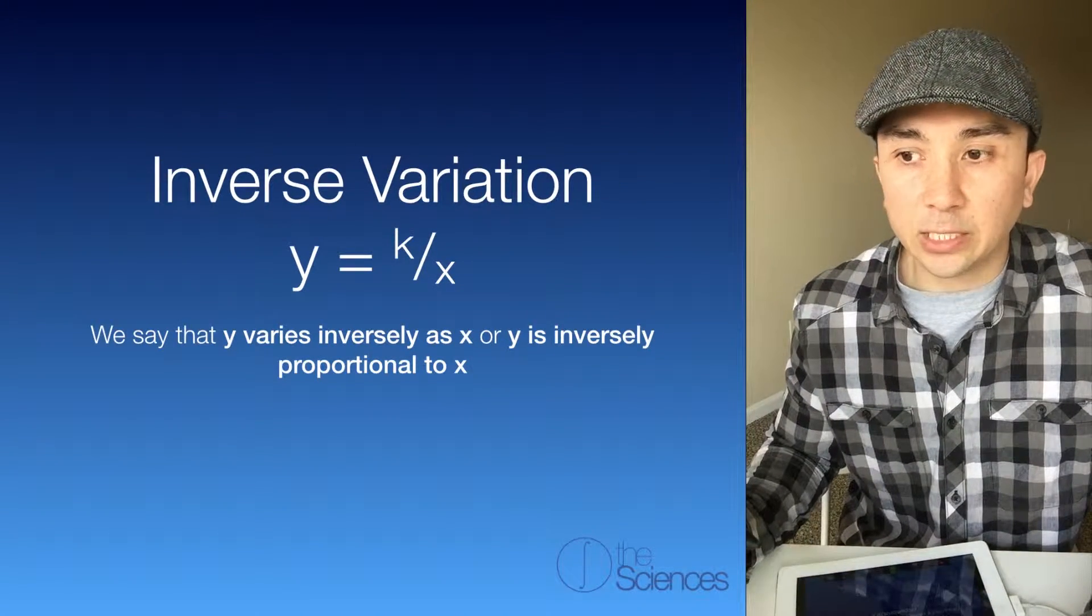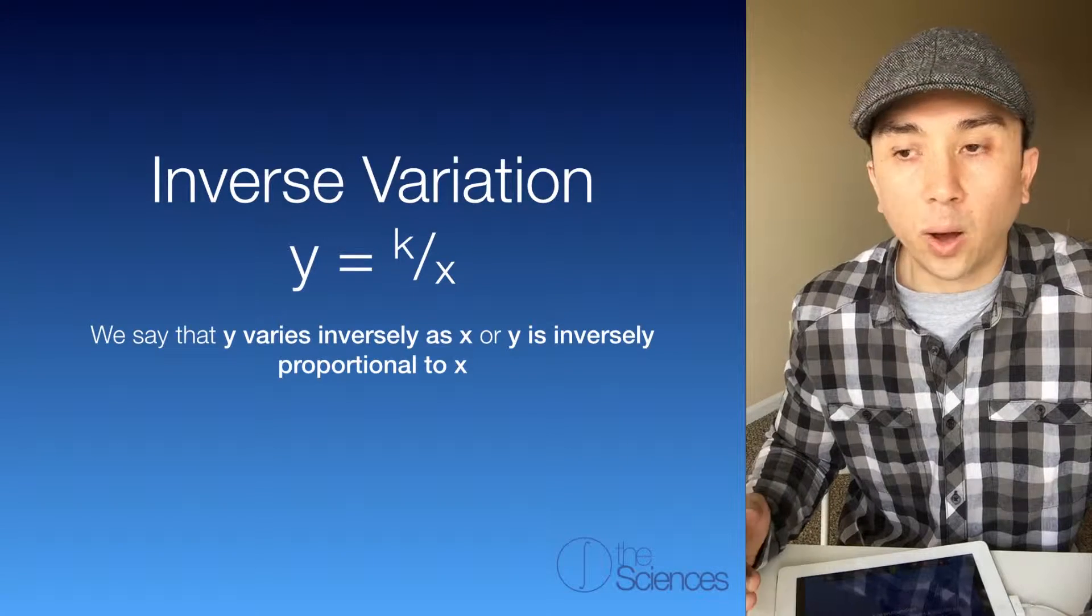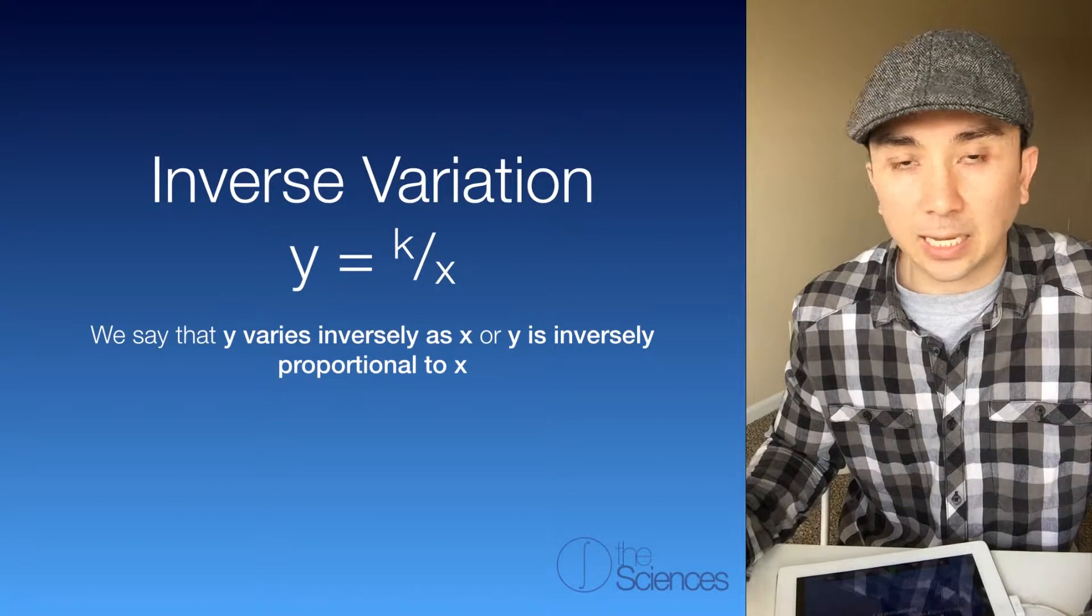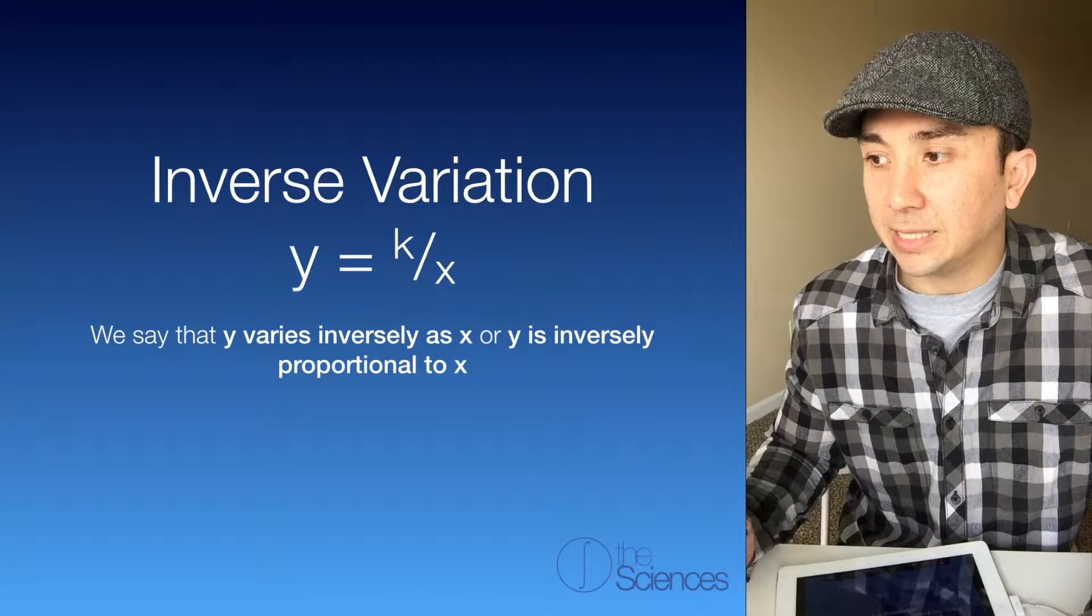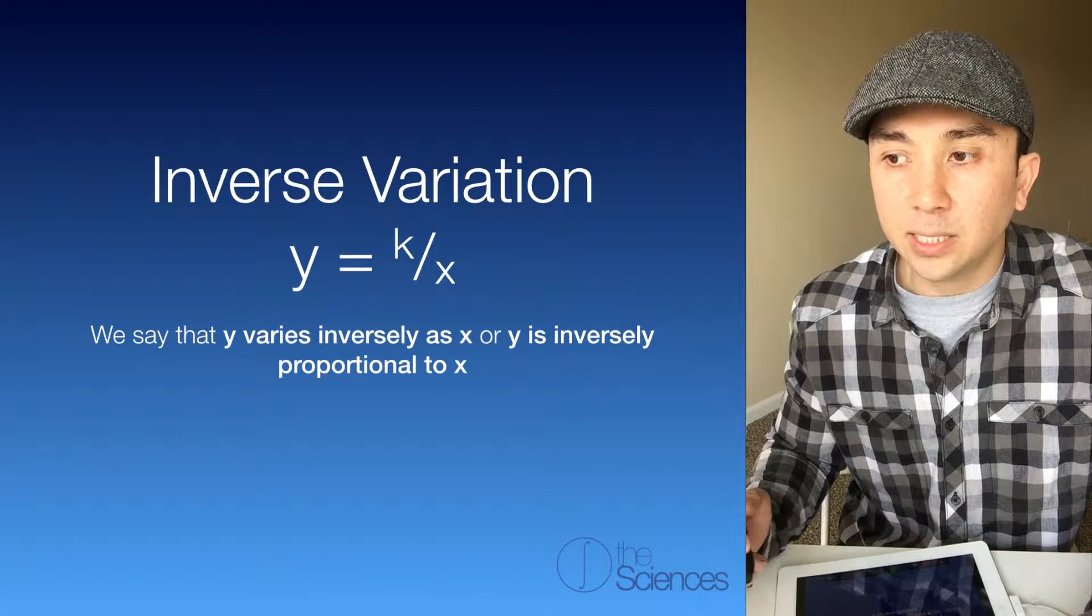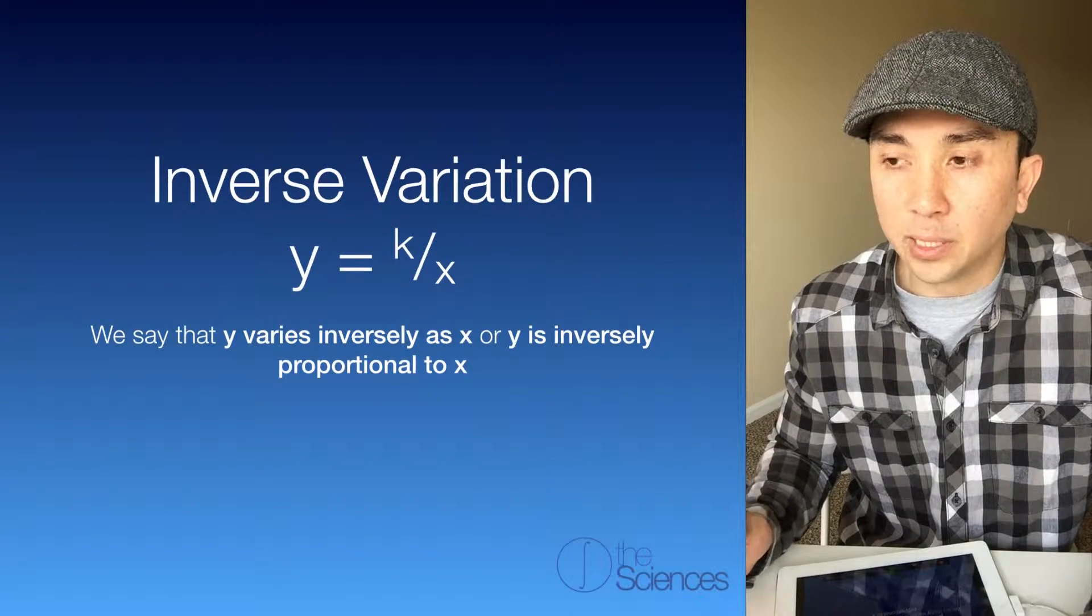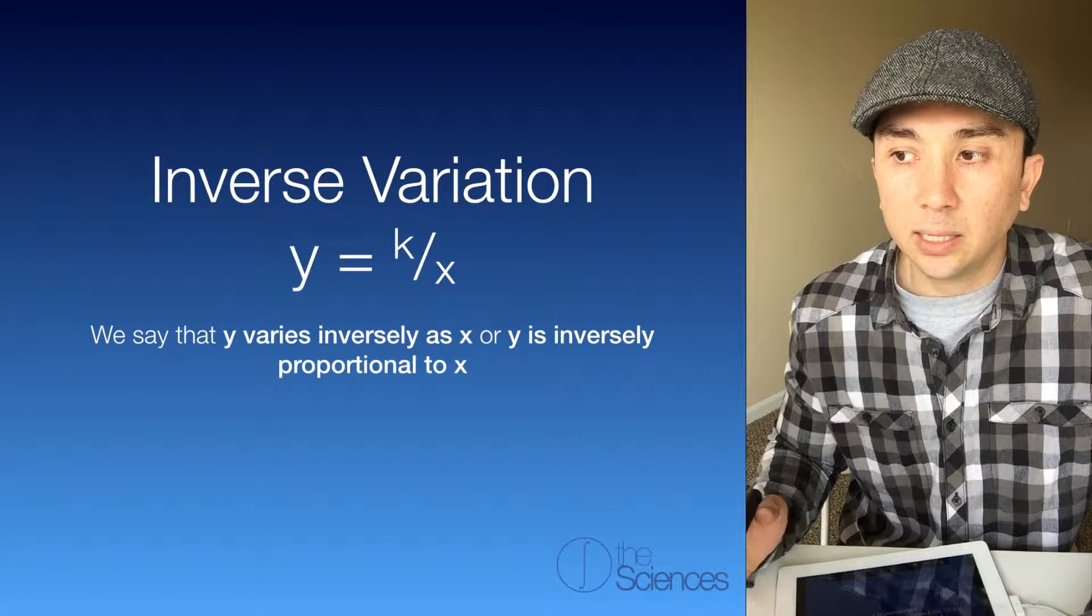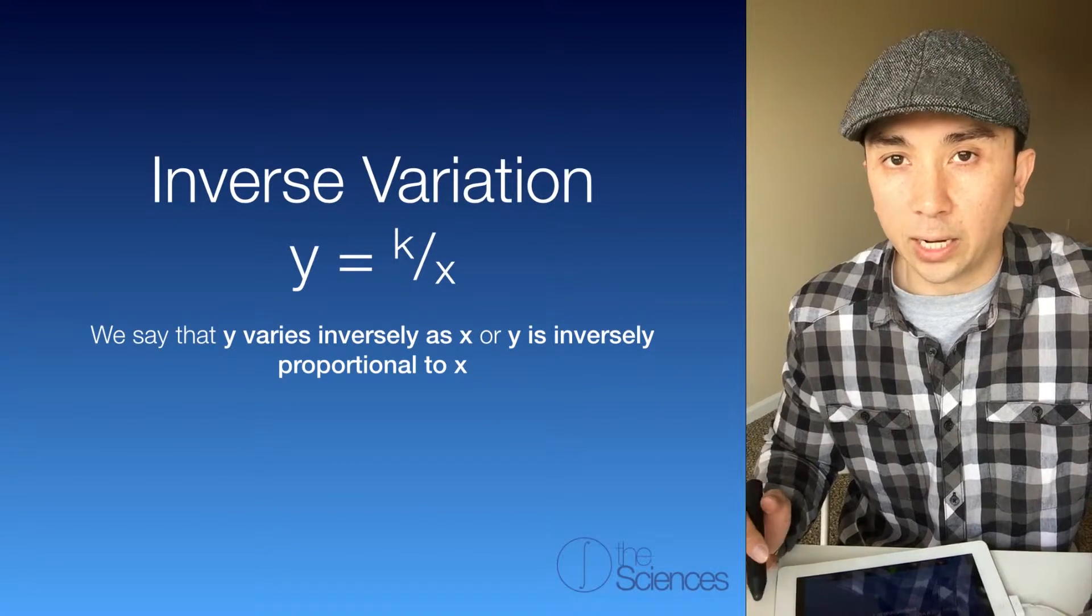Inverse variation says that y varies inversely as x, or y is inversely proportional to x. Notice how the formula equals y equals k over x.